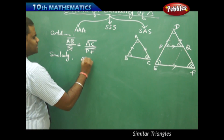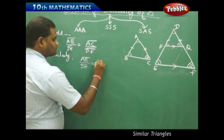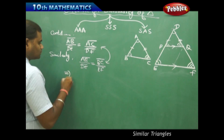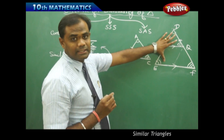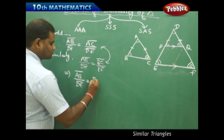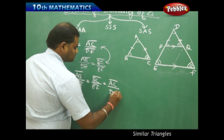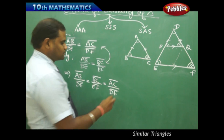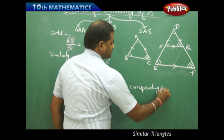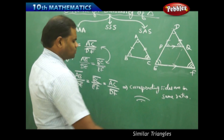Proceeding similarly, I get AB by DE which is also equal to BC by EF. Therefore, combining these two, I can show overall that the side AB by DE, the side BC by EF, and the side AC by DF are in the same ratio — that implies corresponding sides are in the same ratio. Therefore, the two triangles are similar.